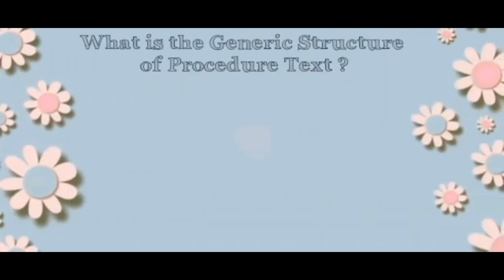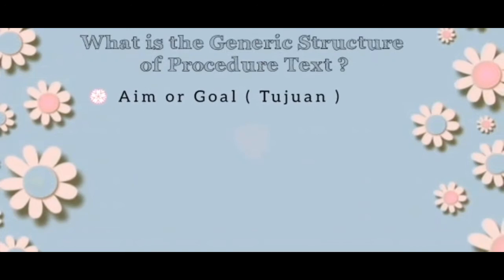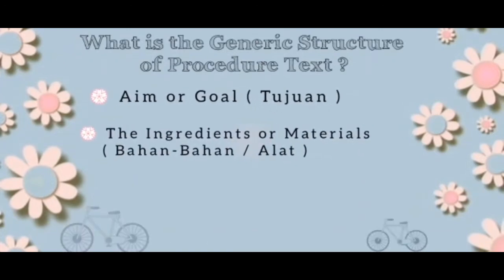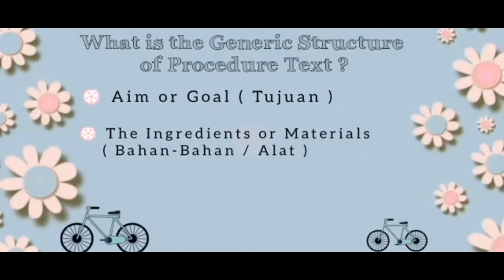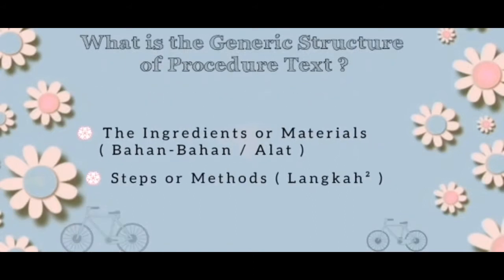The generic structure of procedure text. First, aim or goal. Second, the ingredients or material. Third, steps or method.